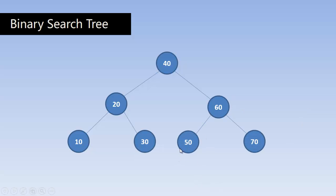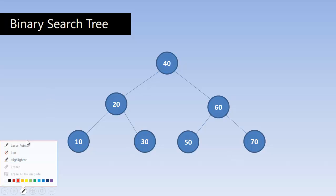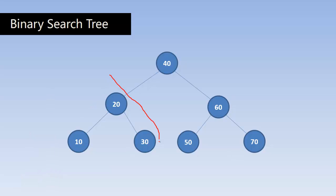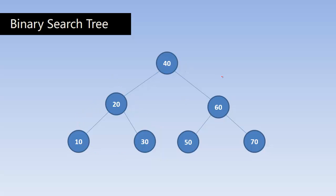50 is lesser than 60, so it is on the left of 60. 70 is more than 60, so it is on the right of 60. When we consider the left subtree, all values 20, 10, and 30 are lesser than 40. And 60, 50, and 70 are greater than 40.